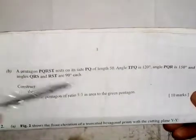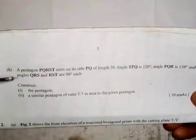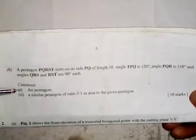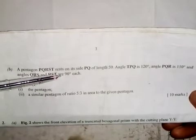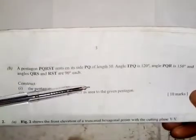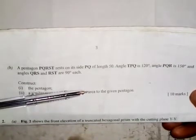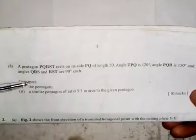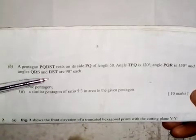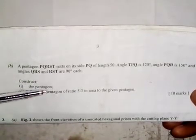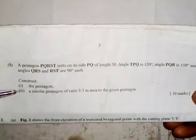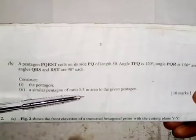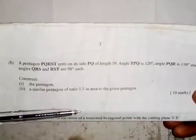The question I want to solve has to do with the enlargement of a plane figure. A pentagon PQRST rests on its side PQ of length 50 millimeters. Angle TPQ is 120 degrees, angle PQR is 150 degrees, and angles QRS and RST are 90 degrees each. We need to construct the pentagon and a similar pentagon of ratio 5 to 3 in area to the given pentagon.